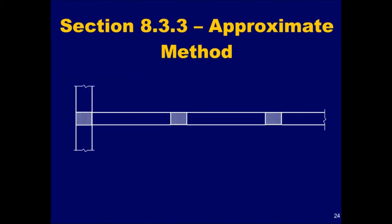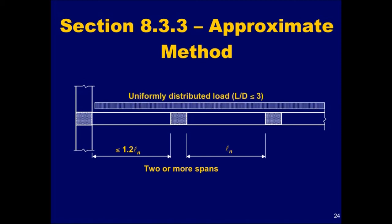The approximate analysis method can be utilized when all of the following conditions are met. First, the structure has two or more spans. Next, the spans are approximately equal, with the larger of the two adjacent spans not greater than the shorter by more than 20%. Third, the loads must be uniformly distributed, and the unfactored live load cannot exceed three times the unfactored dead load. Finally, the members must be prismatic. That is, they must have a uniform cross-section throughout the span.